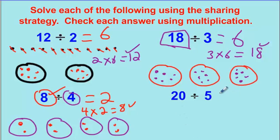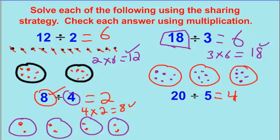Twenty divided by five — if you did it the same way, you should have gotten four. I won't draw the picture; it works the same way as the others. Alright everybody, thanks so much for joining me in this lesson. I hope you understood this method of dividing by sharing. Keep watching until you get really good at it, and I'll see you at the next lesson.